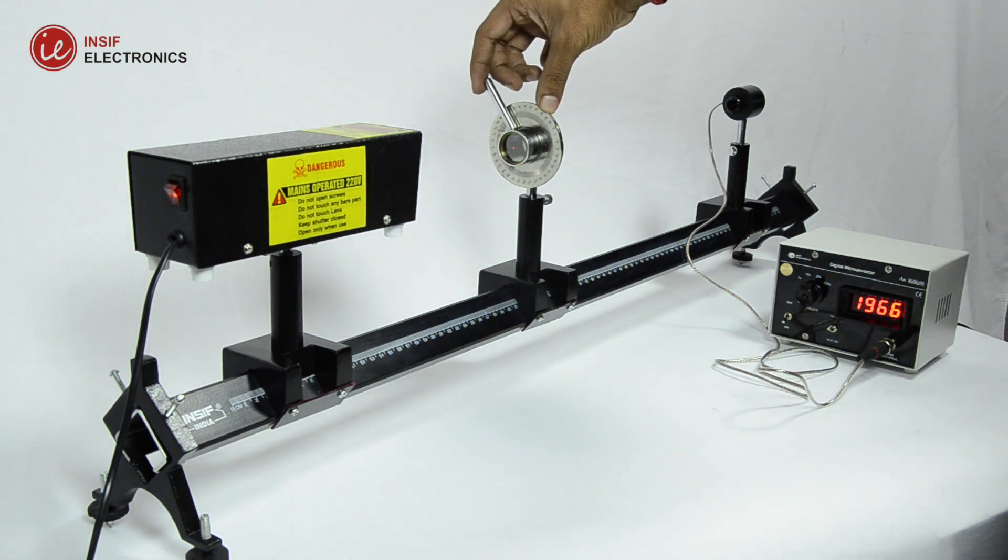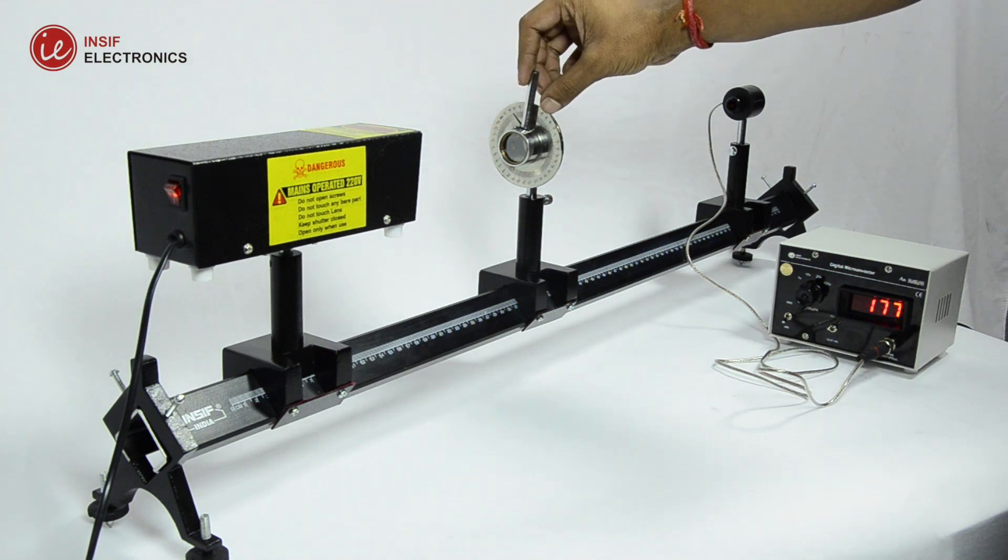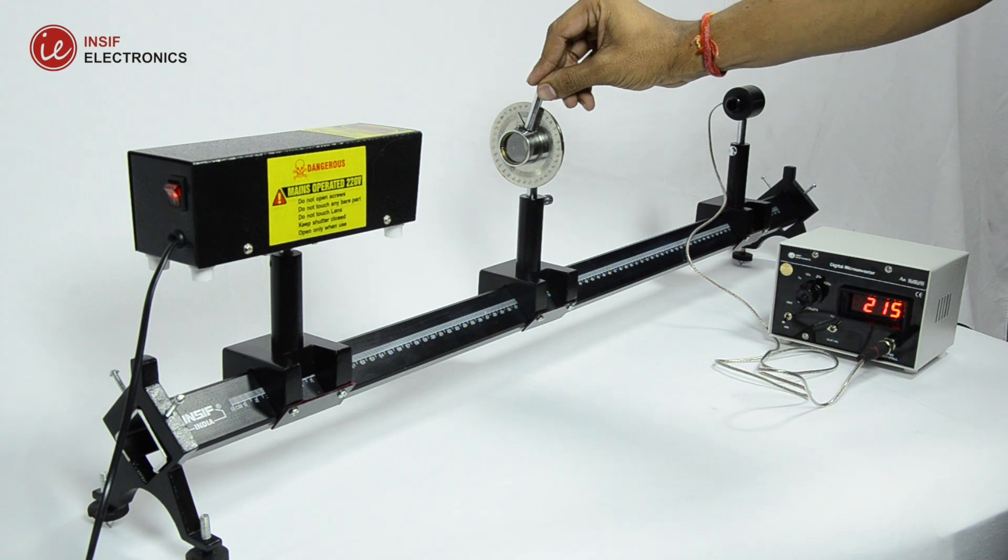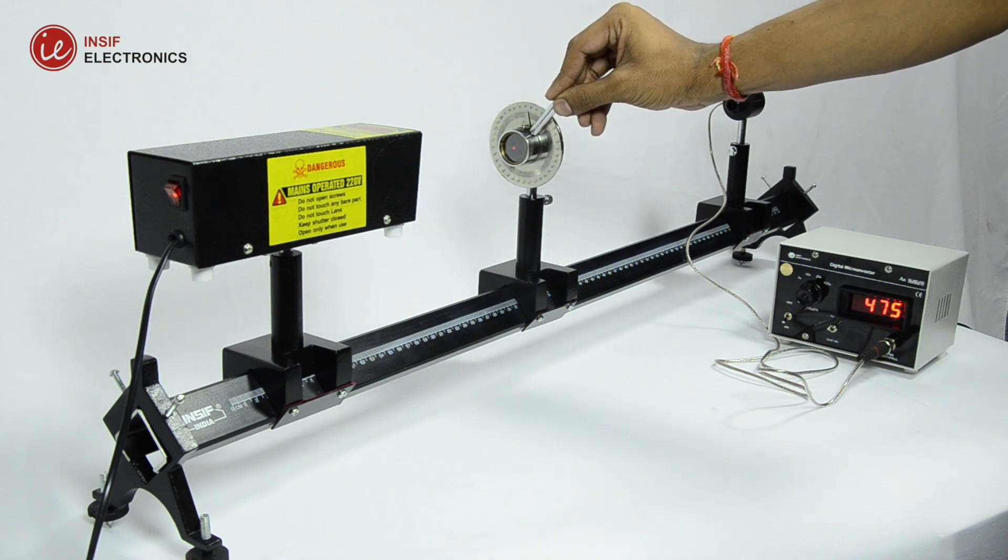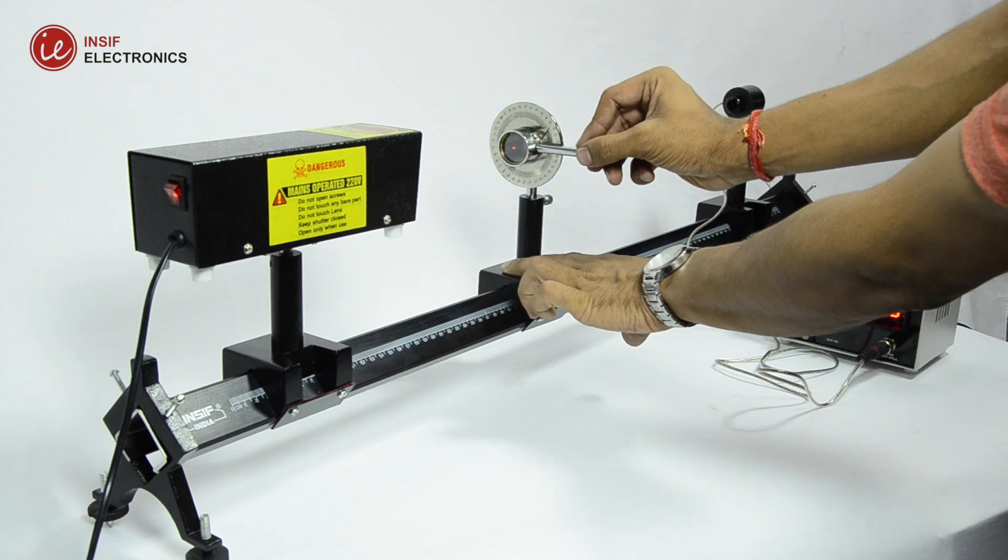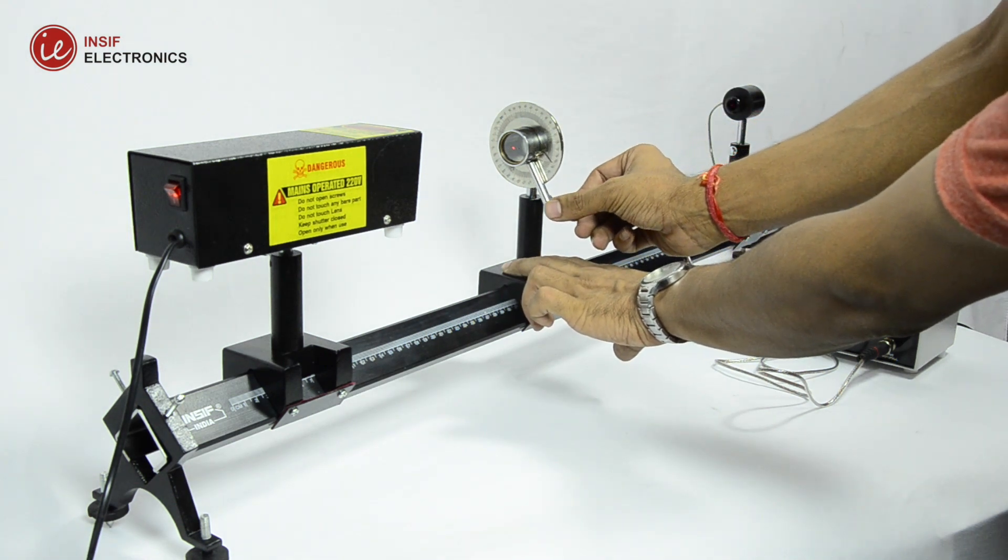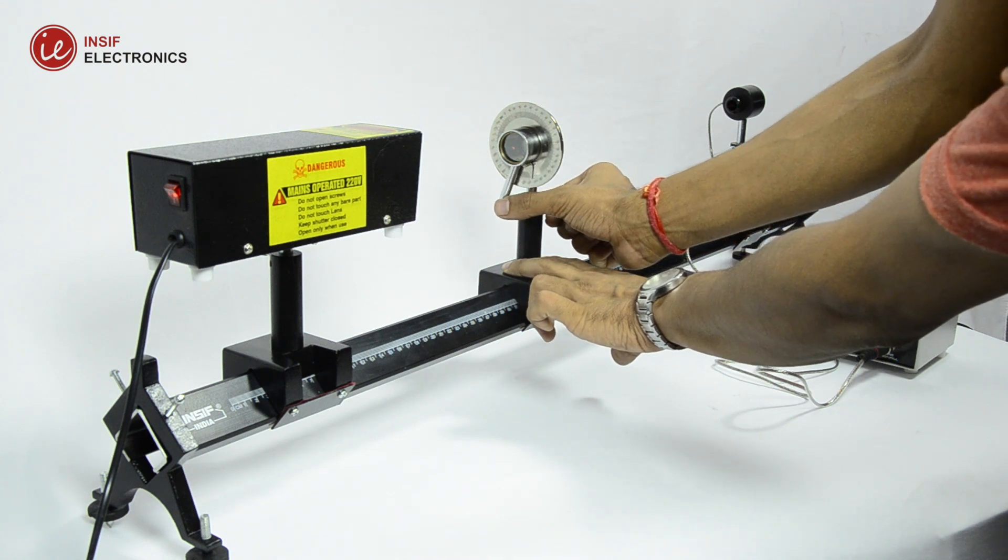Rotate the analyzer from 0 to 360 degrees and note the readings after every 10 degrees. When θ equals 0 degrees or 180 degrees, the transmission axis of the analyzer and the polarizer are parallel and the intensity of light transmitted by the analyzer is maximum.